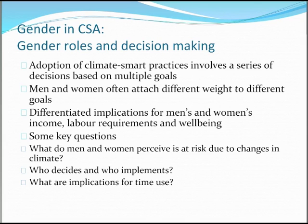Some key questions when examining gender roles in climate smart agriculture: take account of perceptions of risk, which helps us understand the weights people place on different goals. It's important to understand the difference between who decides and who implements, so the people who actually implement practices are fully engaged. Also consider the implications for time use — people working in agriculture in rural areas are very busy, and anything we ask them to adopt must take into consideration their current realities, which sometimes differ for men and women.